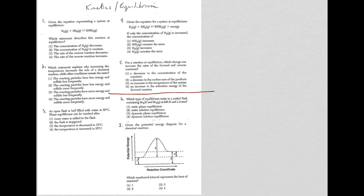So with question 6, we're looking at which type of equilibrium exists in a sealed flask containing bromine as a liquid and bromine as a gas. In other words, Br₂ liquid in equilibrium with Br₂ gas. Obviously, this is just a change in phase back and forth.